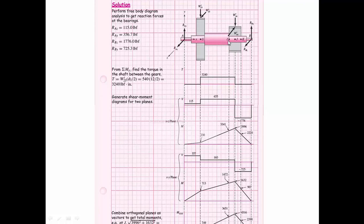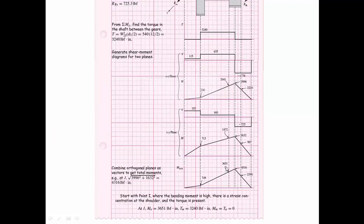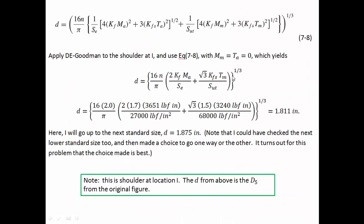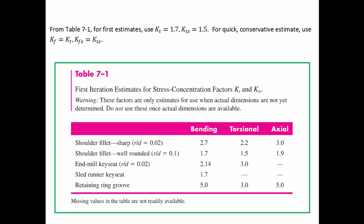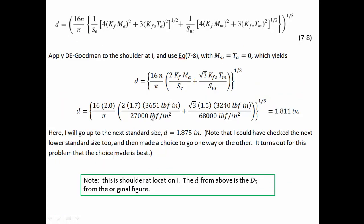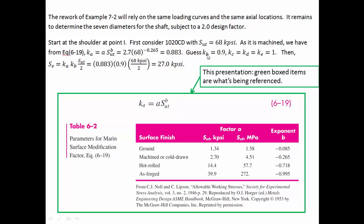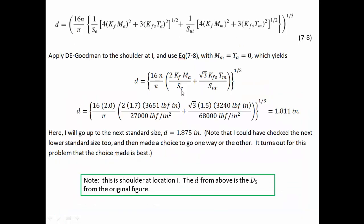For point I, we use 3,651 inch-pounds for the alternating bending moment and 3,240 inch-pounds for the mid-range torque. With SUT = 68 kpsi for 1020 cold-drawn, and SE = 27 kpsi from our KB estimate, we turn the crank and get a calculated diameter of 1.811 inches. We won't use that exact dimension — we'll move to a standard size.